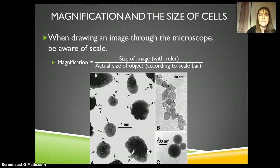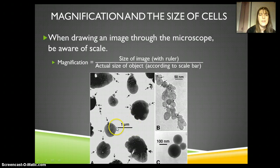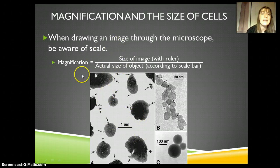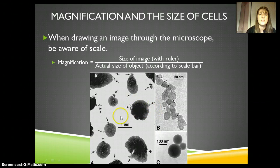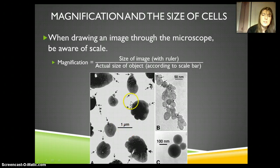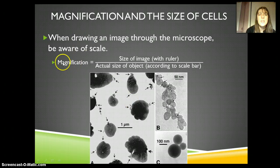When you draw cells, there are a couple of ways to indicate the size. First, you can say what your magnification is — for example, this was drawn at 400 power. You can also put a little scale bar on there, then use the math to relate the actual sizes. If you're trying to figure out the magnification of an image, you take a ruler and measure the size it's actually drawn at — say two centimeters — then take the actual size, about one micrometer, convert them into the same units, divide, and that gives you the magnification. You can also rearrange that equation to find any of the unknowns.